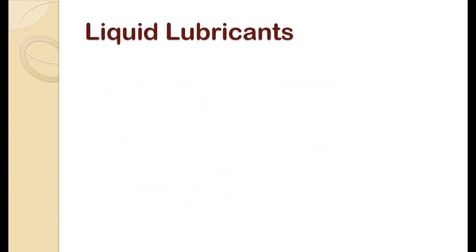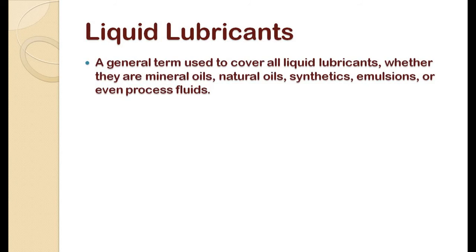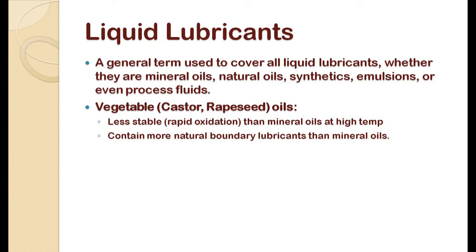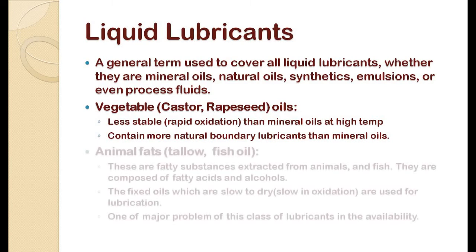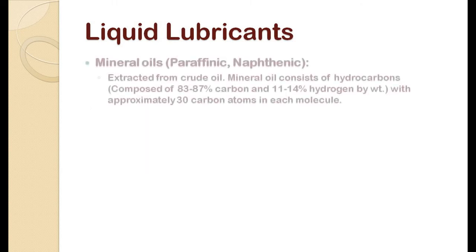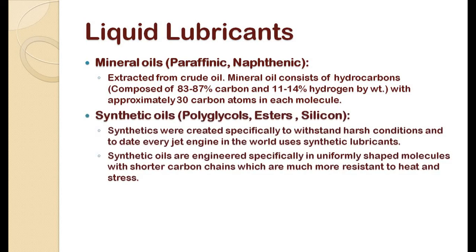The next type is liquid lubricants. This is a general term covering most liquid lubricants, whether mineral oil, natural oil, synthetic oil, etc. Vegetable oil is also used in a few applications but is less stable and gets oxidized at high temperature. Animal oil and mineral oil are also used depending on system requirements. Synthetic oil is specifically created to withstand harsh conditions such as high temperature or high speed. Polyglycols, esters, and silicone oil are types of synthetic lubricants.